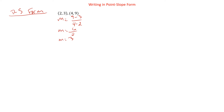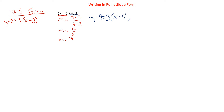Let's use the point 2 comma 3. So we get y minus 3 equals our slope, which is 3, times x minus 2. That's the equation in point-slope form. Now using the other point, we get y minus 9 equals 3 times x minus 4. That's also the equation in point-slope form. The problem is that those two equations are for the same line — they describe the exact same line. We just have a different starting point for each, but it still goes through the other point in the same direction.